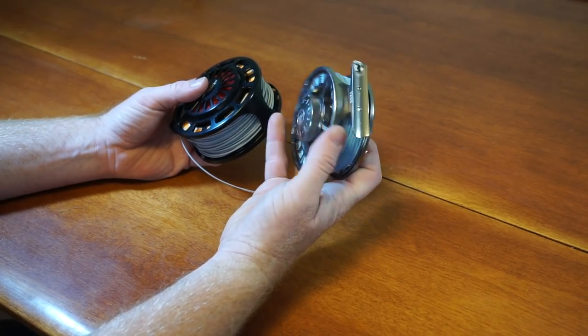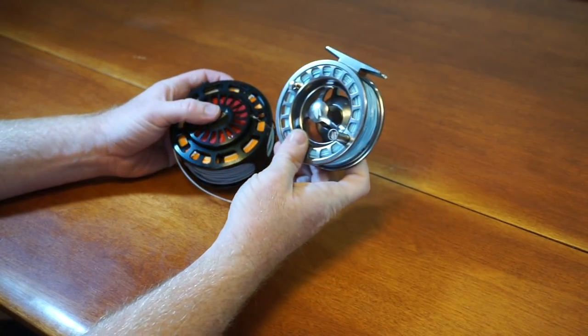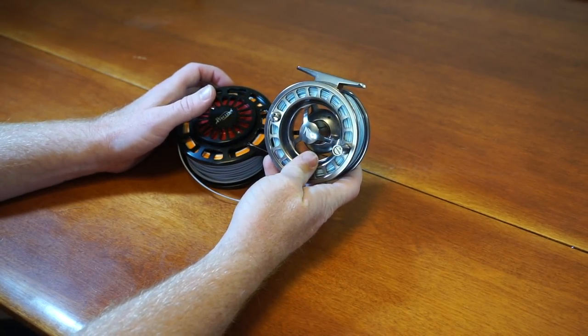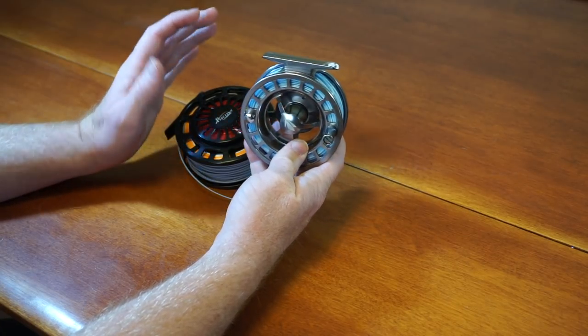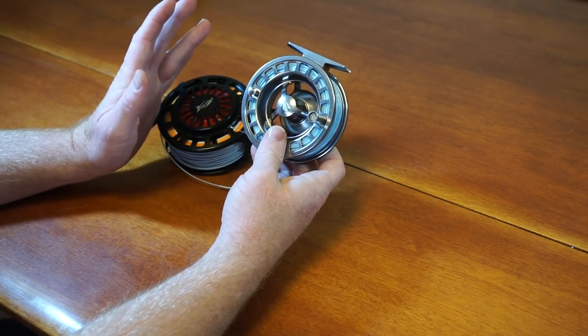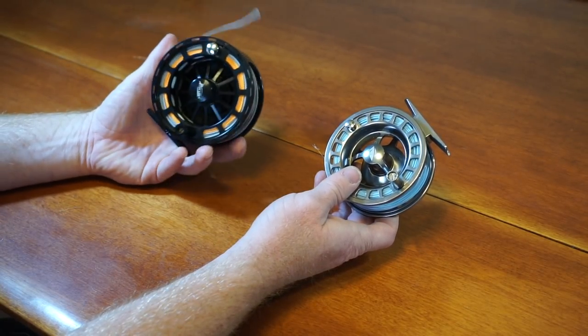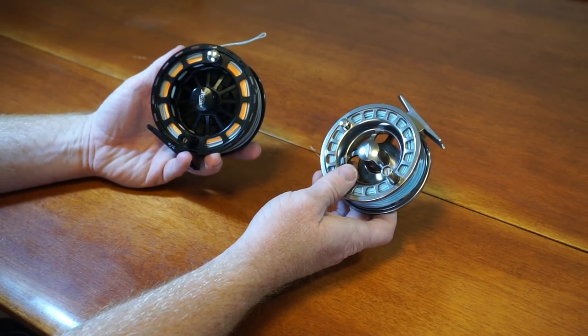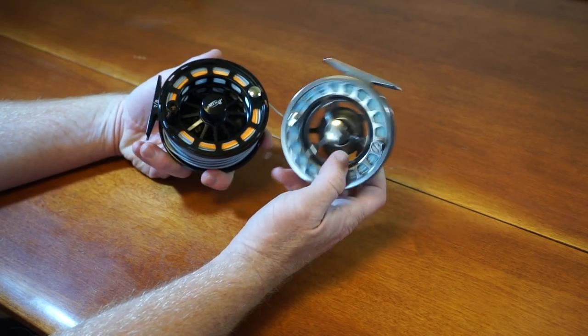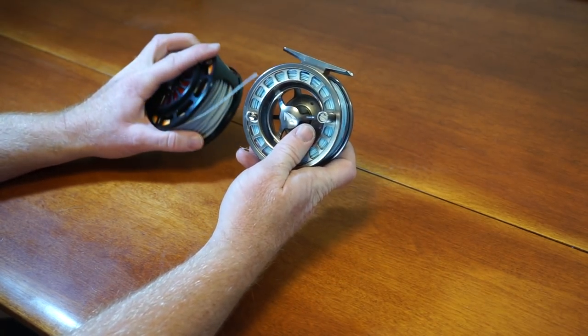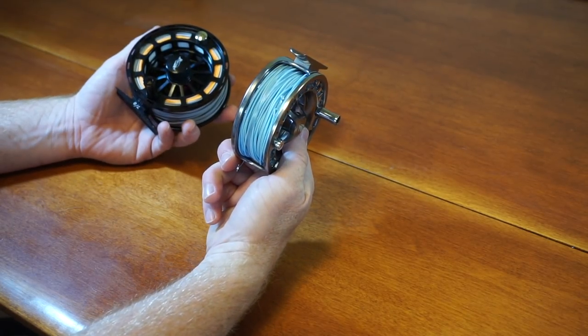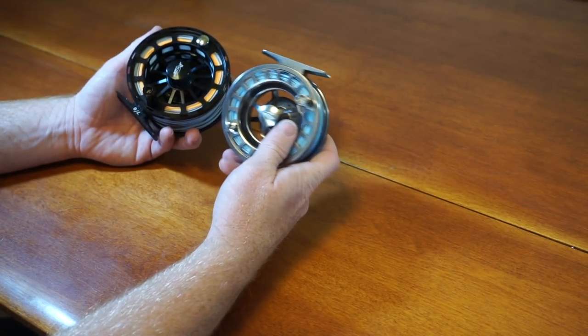I've got a Sage 3250 here. These are pretty expensive reels. I think originally they were like 250 bucks. This one's about 125. This one specifically might be a little more, 130 or something, because it's 7.8. I think the 5.6 is about 125, so about half the cost of the Sage 3250.